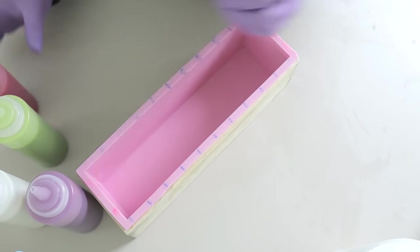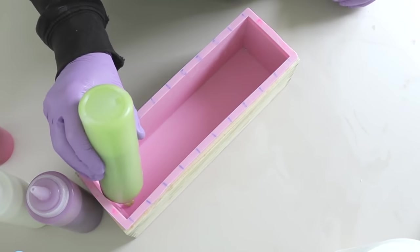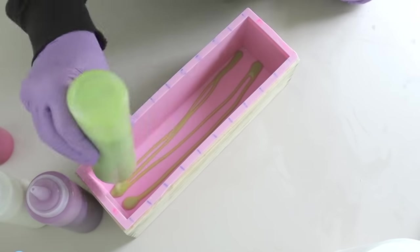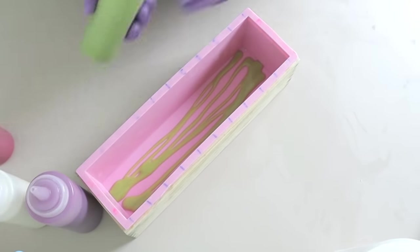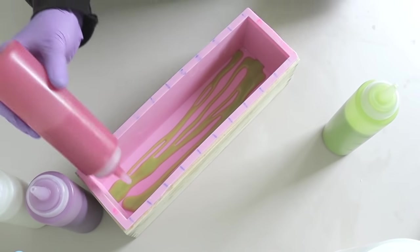And then I'm just going to take my soap mold and grab my squeeze bottles one at a time and just squirt some little rows of batter and just continue doing that and alternating through until I've actually filled up my mold.